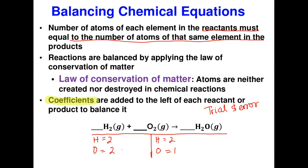To balance, hydrogen is already balanced — two on each side. Oxygen is two on the left and one on the right. I'll add a coefficient of 2 in front of H₂O, giving two oxygen on the right, but now hydrogen is messed up — I have four hydrogen on the right. To correct that, I multiply H₂ by 2, adding a coefficient of 2 in front, giving four hydrogen. Now the equation is balanced: four hydrogen on each side and two oxygen on each side.